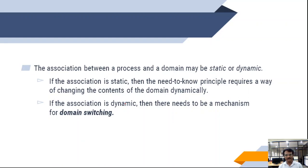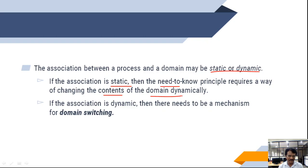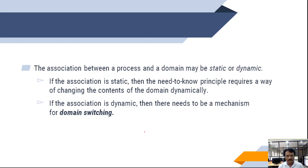The association between a process and its domain may be static or dynamic. If the association is static, then the need-to-know principle requires a way of changing the domain content dynamically. If the association is dynamic, there is a need for a mechanism known as domain switching, which we will see in later discussion.